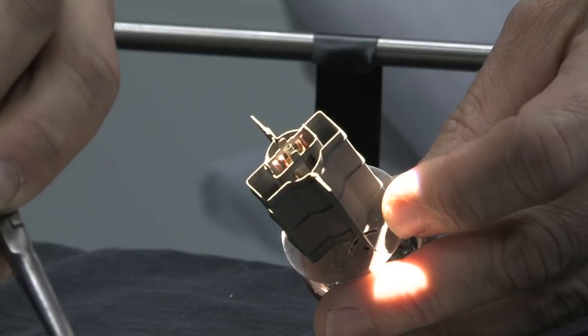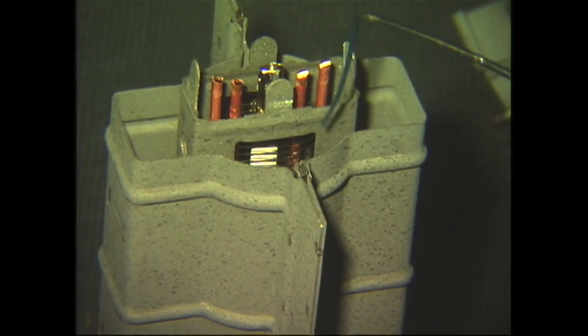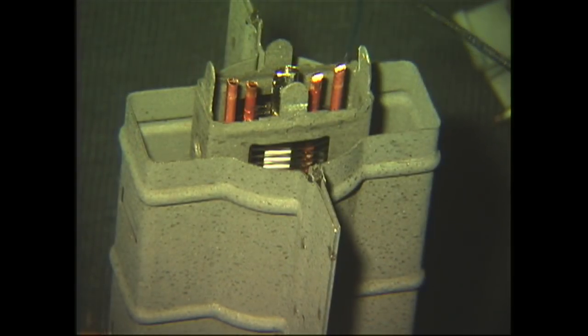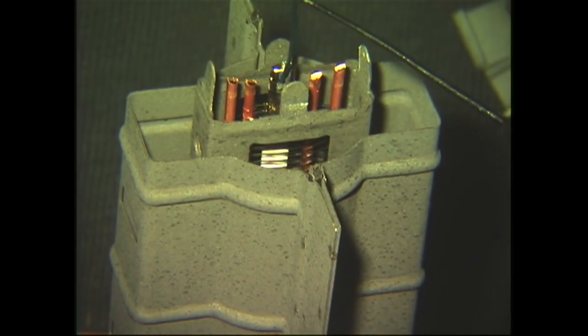This is a great view because you'll be able to look down inside the tube and see the different screen grids. Right here you'll see the plate, the beam-forming plate, the screen grid, the control grid, and the cathode sleeve with the filament down the middle of it.